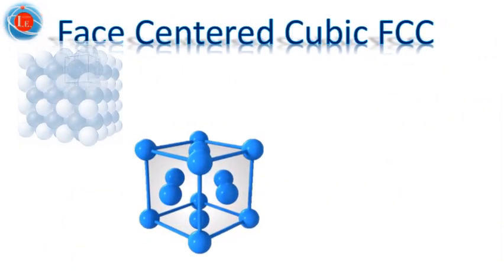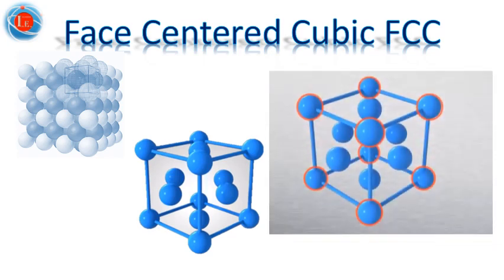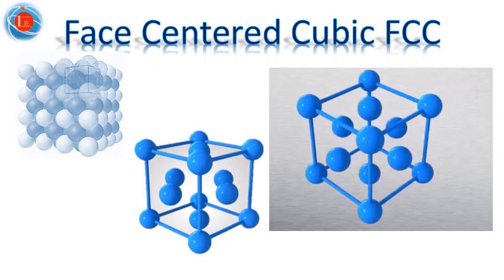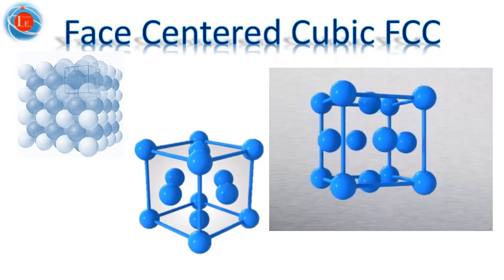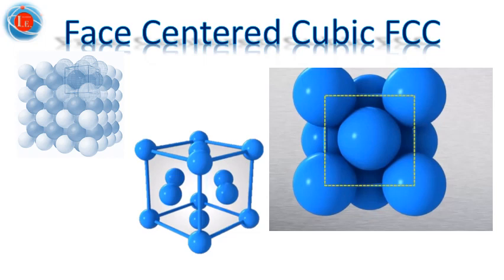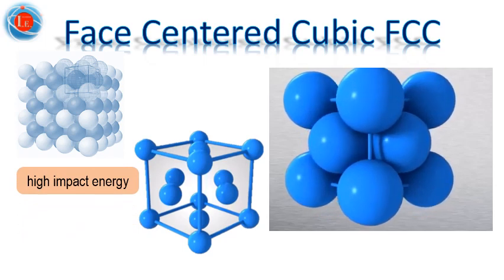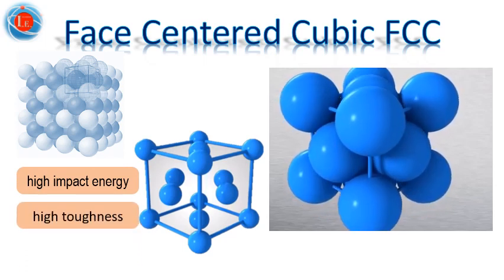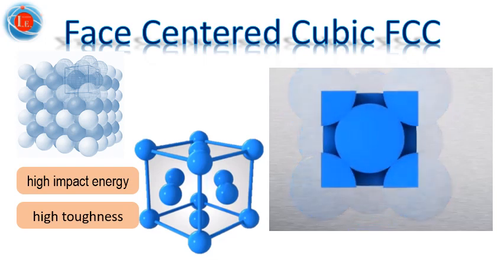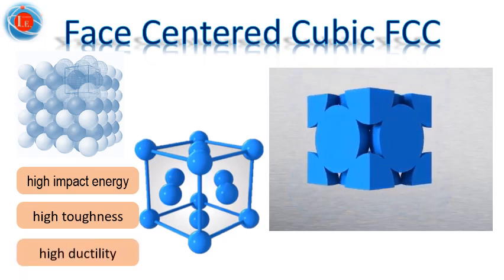The face-centred cubic structure has an atom located at each corner of the cube, in addition to another atom at each face of the cube. The atoms from one layer nest themselves in the empty space between the atoms of the adjacent layer. Consequently, in the FCC structure the atoms can pack closer together than they can in the BCC structure. Therefore, a typical face-centred cubic alloy would have relatively high impact energy and relatively high toughness values, even over lower or sub-zero temperatures. In addition, the FCC structure also has a high number of slip systems, making the structure more ductile.